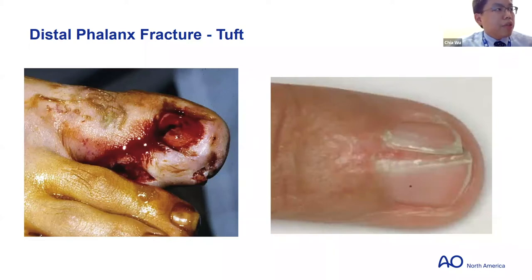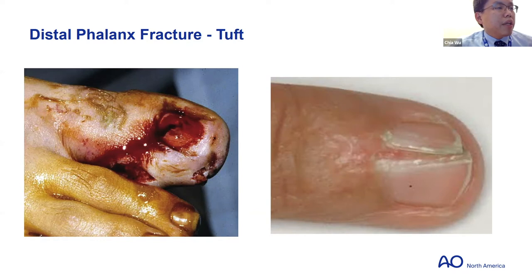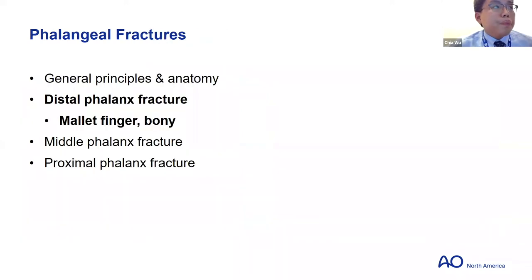If there's any injury to the nail bed, you want to place the nail back to stent the nail bed open so you don't get nail deformities — if the nail bed heals to the underlying nail fold, that can prevent the new nail from growing out, resulting in a split nail deformity. If there's any concern for contamination, consider placing the patient on PO antibiotics. If there's instability, consider pinning.